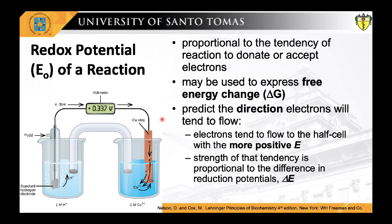The usefulness of reduction potential stems from the fact that when E° values have been determined for any two half-cells relative to the standard hydrogen electrode, their reduction potentials relative to each other are also known. We can then predict the direction in which electrons will tend to flow when the two half-cells are connected or when components of both are present in the same solution. Electrons tend to flow to the half-cell with the more positive E°, and the strength of this tendency is proportional to the difference in reduction potentials, or ΔE.